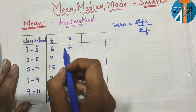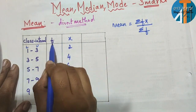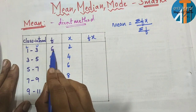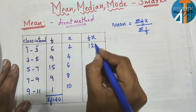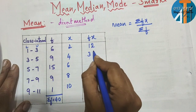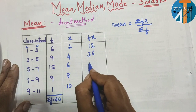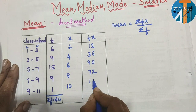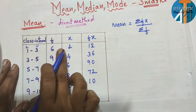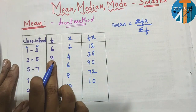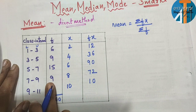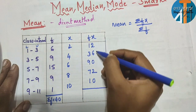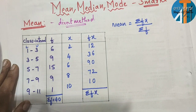So we write the x values directly. Now, you have to multiply f and x to get fx. Let us add all these fx values to get σfx.